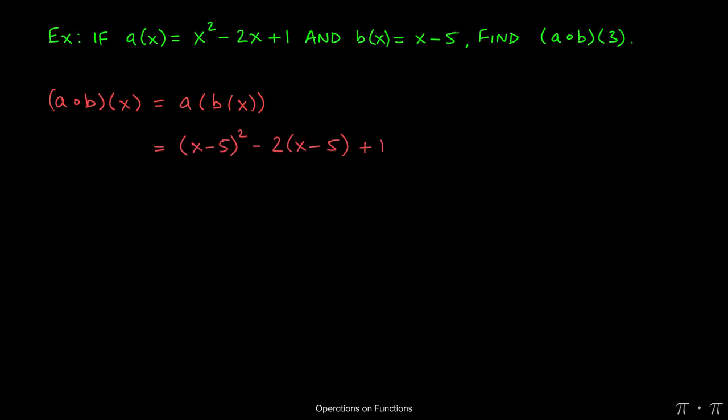So that's exactly what I did. I took x² and replaced it with (x - 5)². I took the -2x and I replaced it with -2(x - 5). The 1 doesn't have an x attached to it, so the 1 just comes along for the ride.